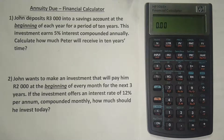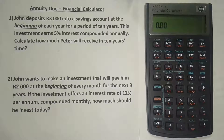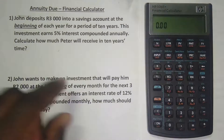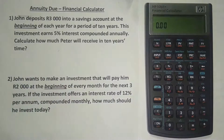He's depositing this amount every year at the beginning of every year. That's why it's an annuity due — because the payments occur at the beginning of every year. So that's why we know it's an annuity due, and it's at the rate of 5% interest compounded annually.